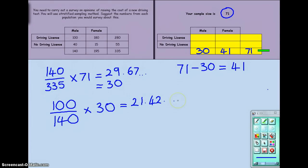And the decimal continues. Again, I can only have a whole number of people. So I round that number to the nearest whole number, which is 21 people. Now, since I need only 30 males and 21 of them will have driving licences, again, I can do a very simple subtraction to calculate the number which will not have driving licences. 30 subtract 21 gives me 9 males.